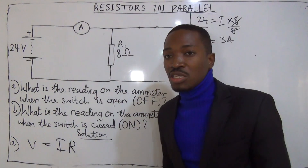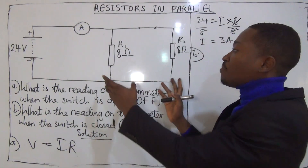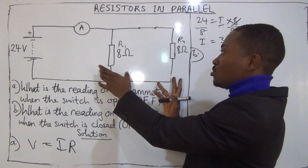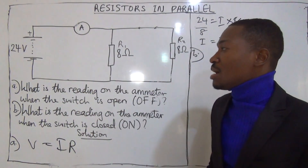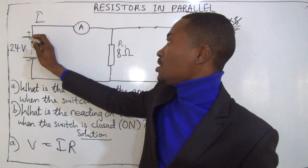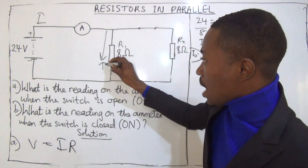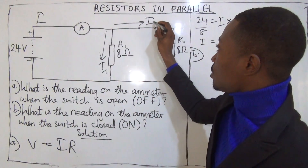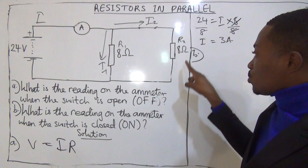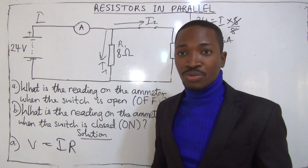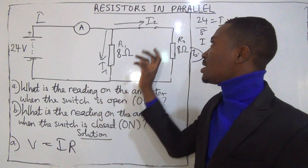When the switch is closed, this acts as a simple conductor. And what do you have? You have a parallel circuit — two resistors in parallel. The current flowing here is what the ammeter will give, and that's going to split into I1 and I2. To make our work easier, we will find I1 and I2 separately.